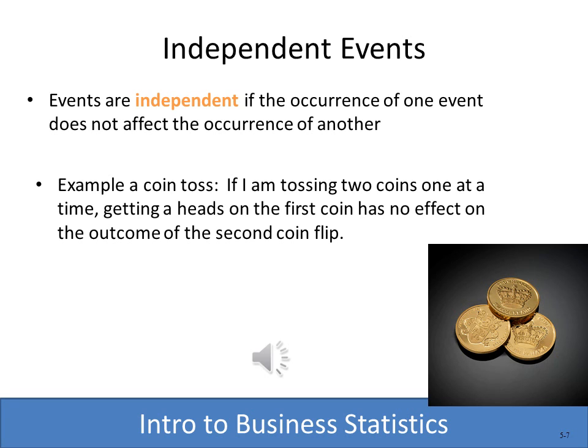Another important term is the concept of independence. Events are independent if the occurrence of one does not affect the ability or the occurrence of another. If I'm throwing two coins and I get a head on one, that doesn't prevent me from getting a tail or a head on the other — because the events are independent.